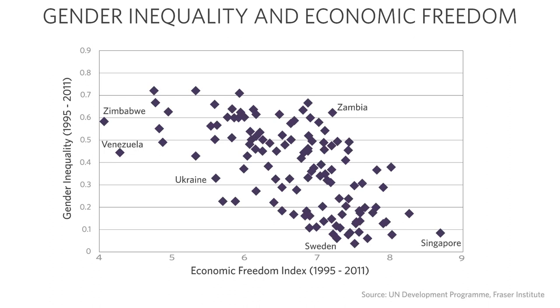Here's the same data presented slightly differently. Economic freedom is measured across the horizontal axis — to the right is more economic freedom, to the left is less. Up and down is gender inequality — up is more inequality, down is less. Every dot is a country. There's noise in the system — dots all over the place — but there's also a trend. On average, as you move to the right, the dots fall. There are exceptions, but it's the underlying trend that's interesting.